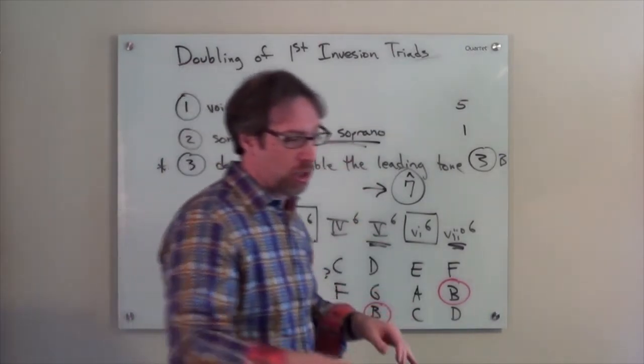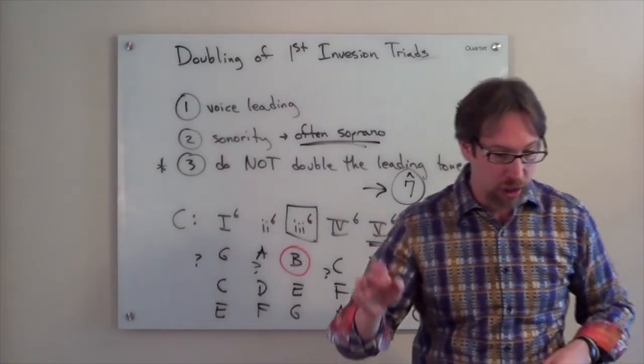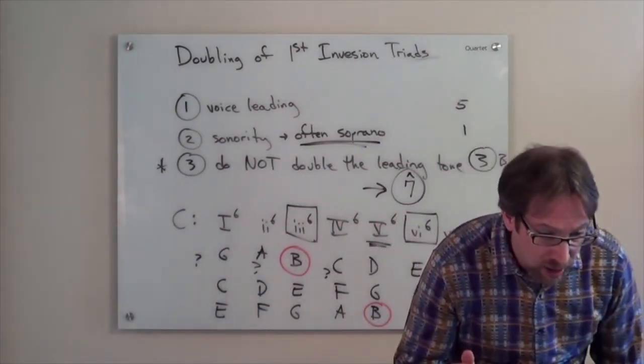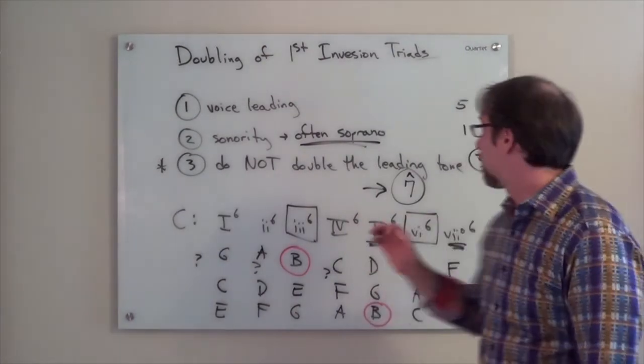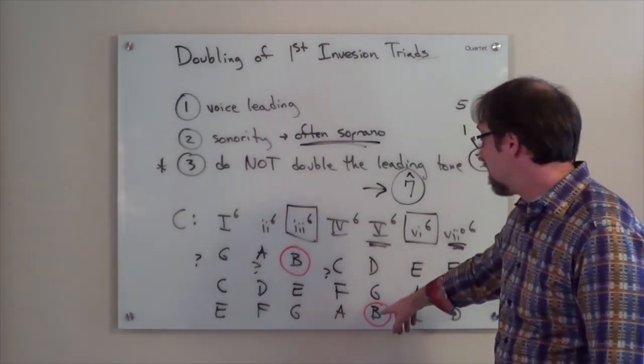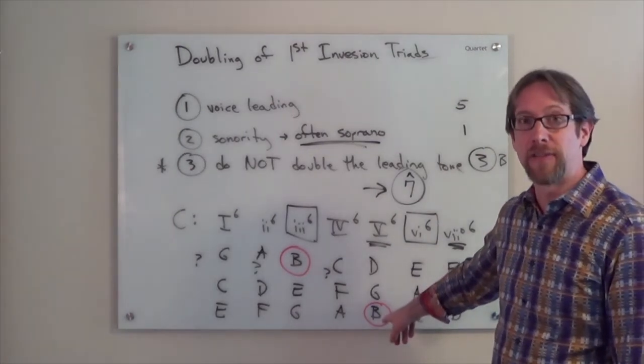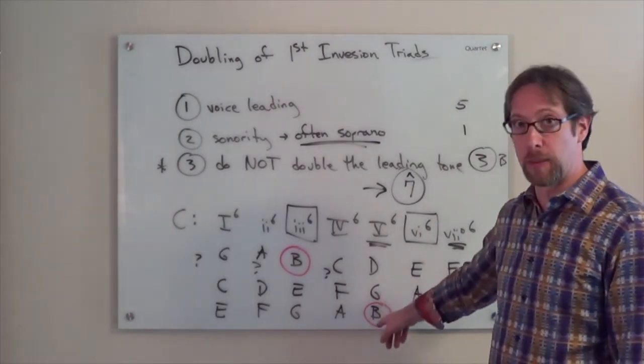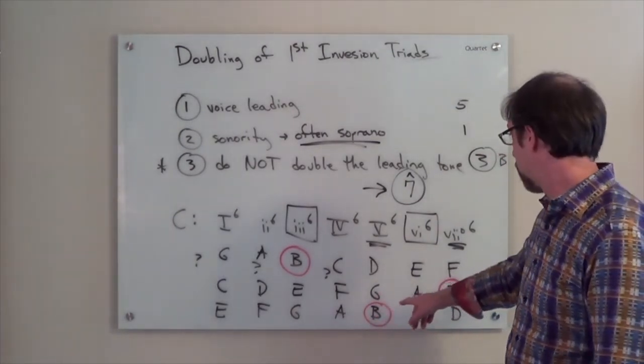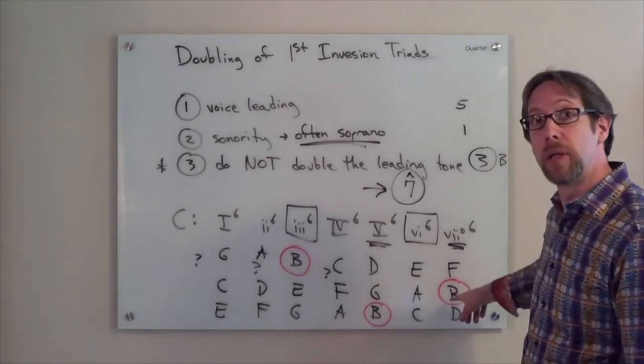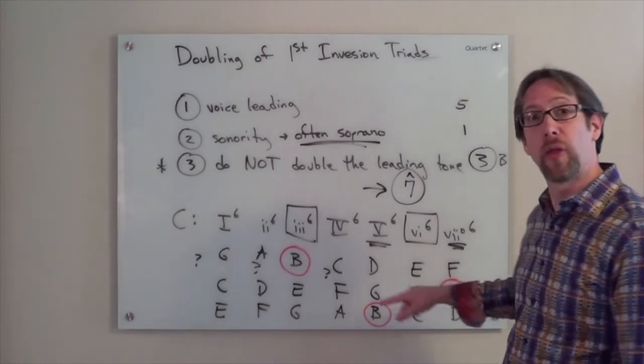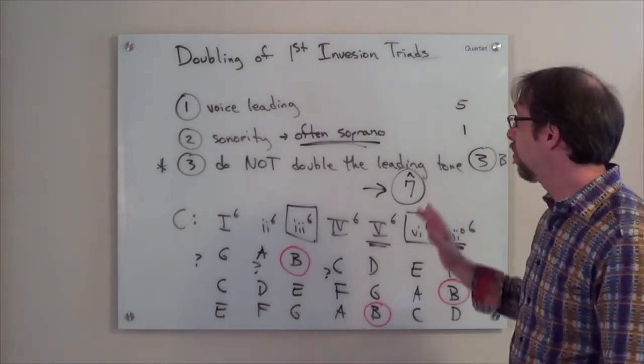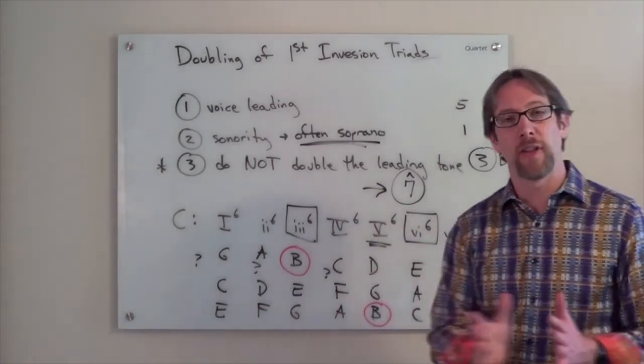And maybe I misunderstood Troy's question here with always double the third. It's more that you never double the third in a five six chord. Never double the third in a five six chord. And never double the root in a seven diminished sixth chord. Those are your most critical things to avoid. If you do that, the music's going to flow nicely.